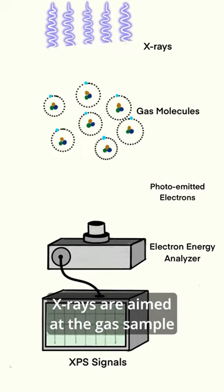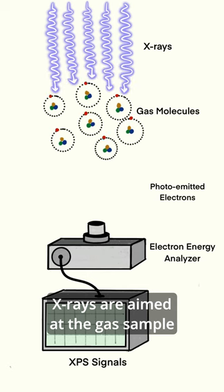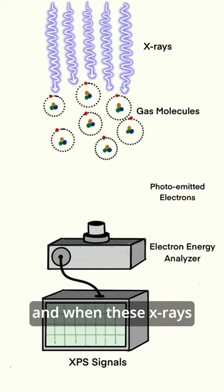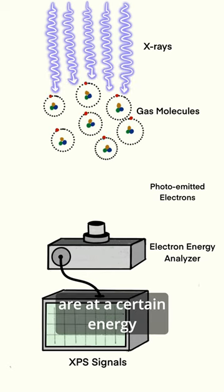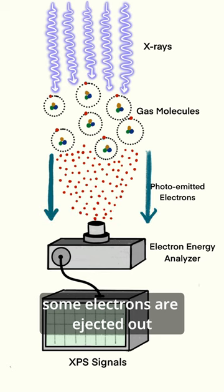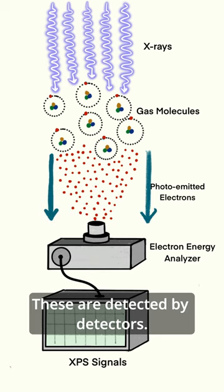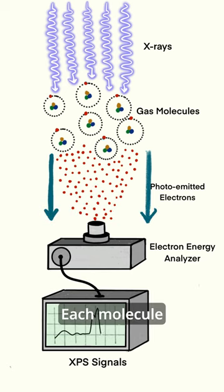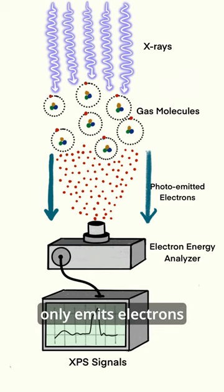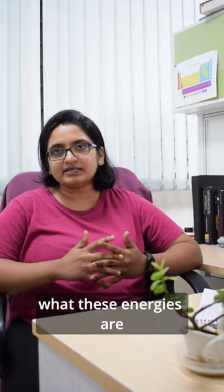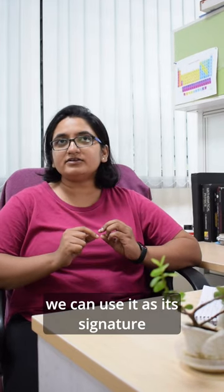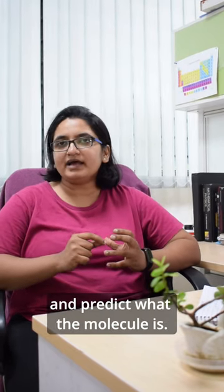In this method, X-rays are aimed at the gas sample, and when these X-rays are at a certain energy, some electrons are ejected out. These are detected by detectors. The interesting part is each molecule only emits electrons at a certain energy of X-rays. So once we find out what these energies are, we can use it as its signature and predict what the molecule is.